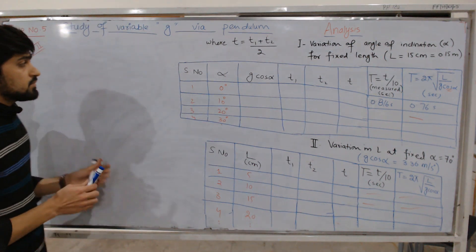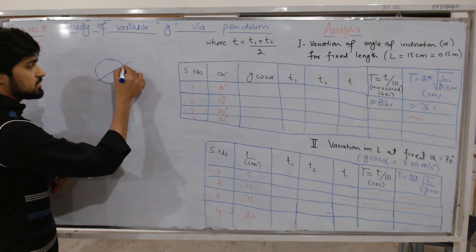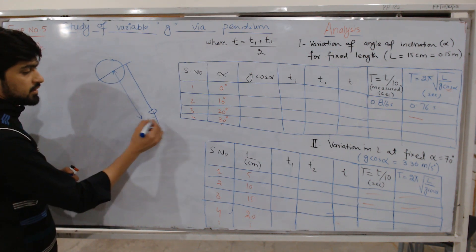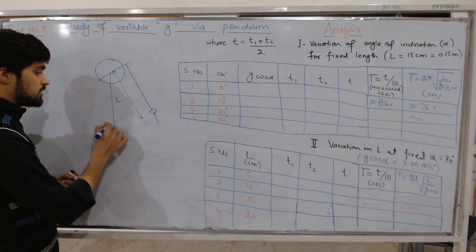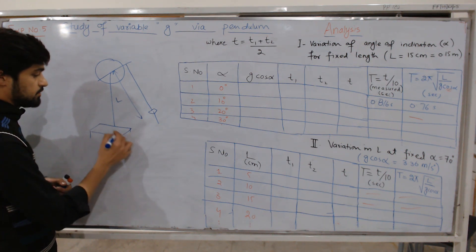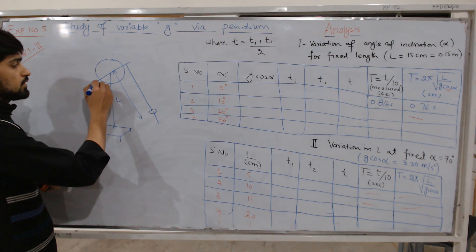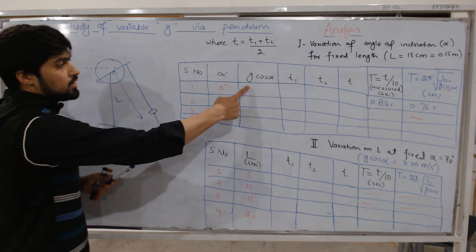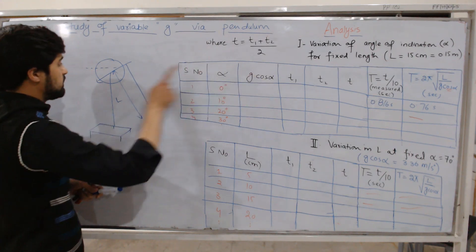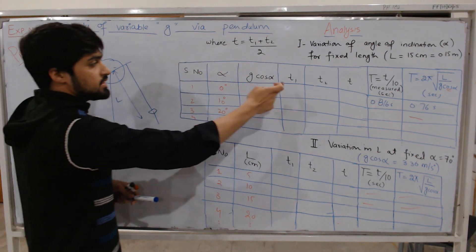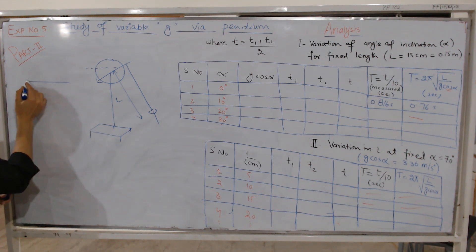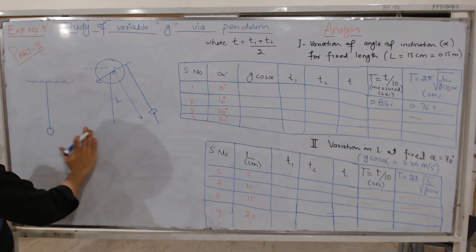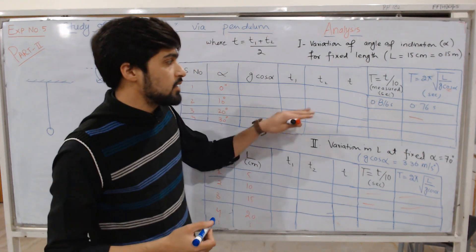Let us say this is our inclined pendulum, with length L measured to the center of mass of the metallic disc. In this case, we have a circular metallic disc. This is the length L and this is our variable g pendulum placed on a horizontal surface. For the first case at 0 degrees, your pendulum acts just like a simple pendulum. You will measure alpha, which can be calculated from the degree scale.